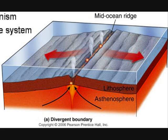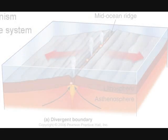These boundaries form when two plates begin to move away from each other. Divergent boundaries appear along mid-ocean ridges in the ocean and across rift valleys in northwestern Europe and East Africa.